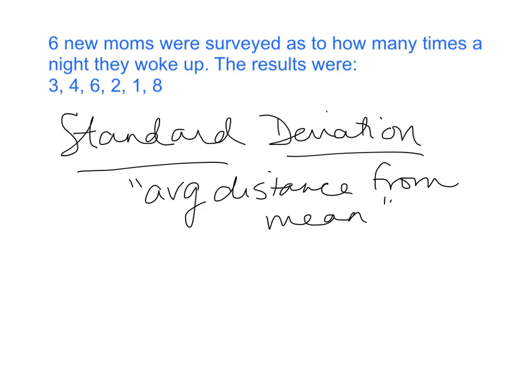If you have a data set, a group of numbers, and you find the mean, the standard deviation tells you on average how far away from that number are most of the other numbers. A low standard deviation means your test scores were pretty consistent — everybody was right around the average. A high standard deviation means you had a lot of variation, with scores far below and far above average.